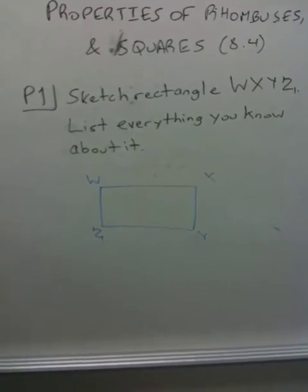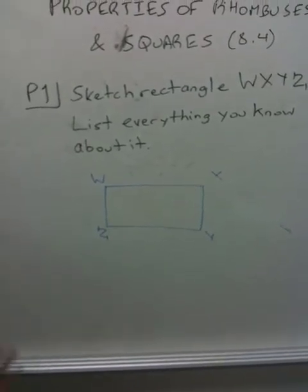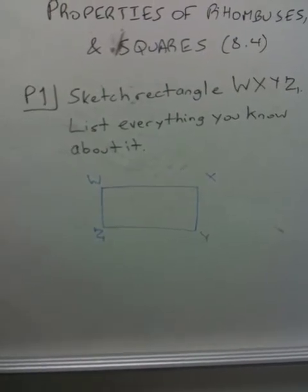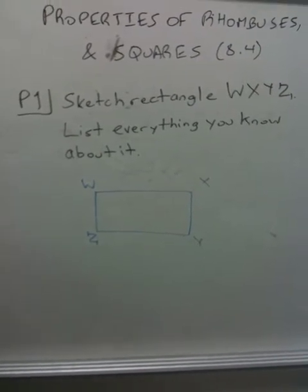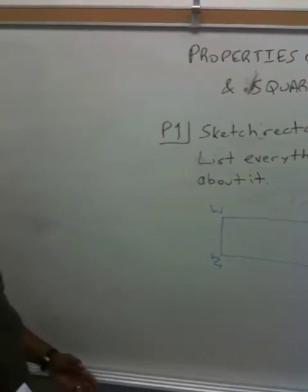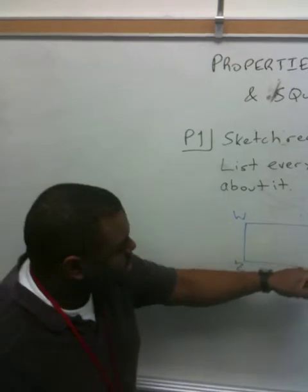So all we've got to do now is say what are some things about this. Well, let's talk about some things we've done before. The first thing, of course, was that if it's a rectangle, that means it has to have four congruent angles.